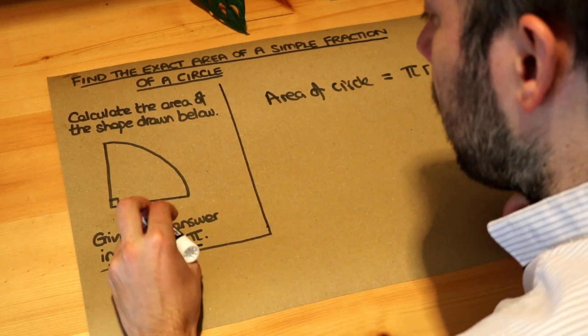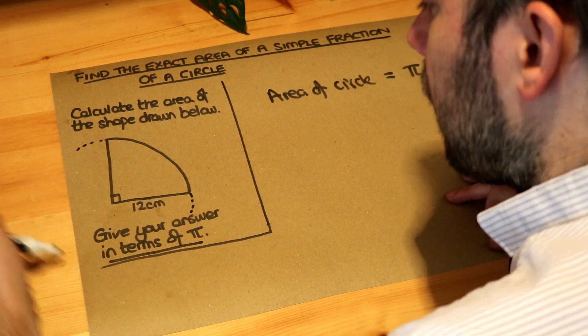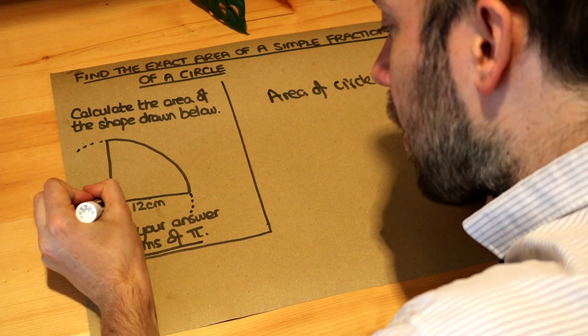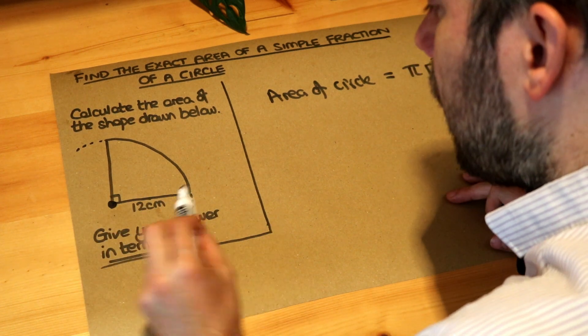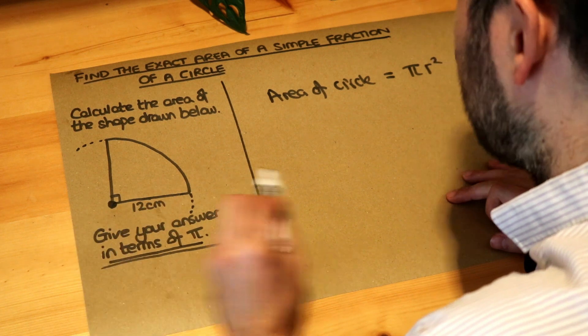Now we've got a quarter of a circle here. If I was to continue this circle like this, so it's a full circle, we can see that would be the centre of the circle. So the 12 centimetres is in fact the radius of the circle.